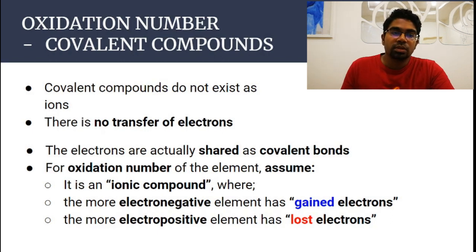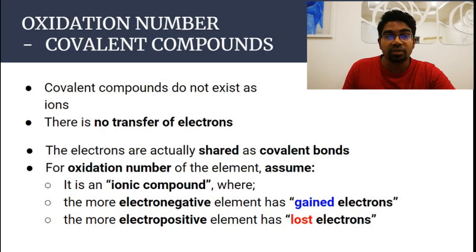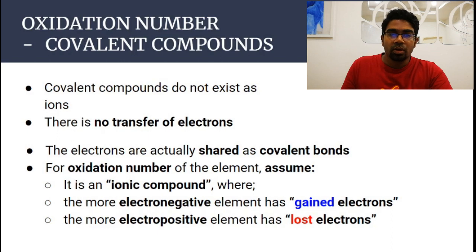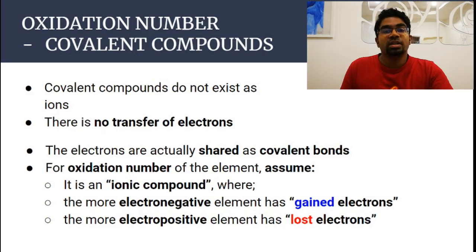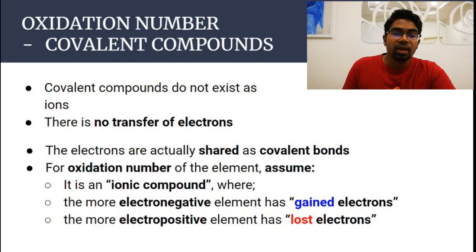For covalent compounds, they are not ions — they don't exist as ions; they are sharing electrons. There has not been any electron transfer; no element has lost electrons and no element has gained electrons. However, we treat it like an ionic compound. That's why I said oxidation number is an arbitrary charge assignment — they don't actually have a charge, but we assign a charge.